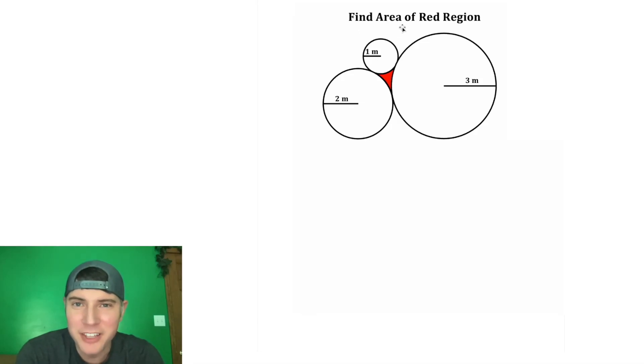Hey guys, this looks like a fun one. It says find the area of the red region. So we want the area of the region contained by these three circles. And these circles have a radius of 1, 2, and 3 meters.